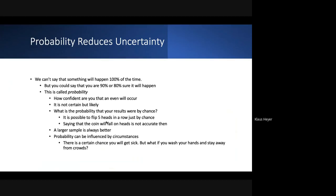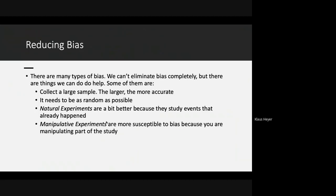Researchers have biases, and there are things you can do to reduce bias. Collecting a large sample helps — the larger the sample, the more accurate it is. But it also needs to be random and representative of the population you want to infer about. If you're making a conclusion about a pine forest, your sample needs to come from pine trees, not oak trees.